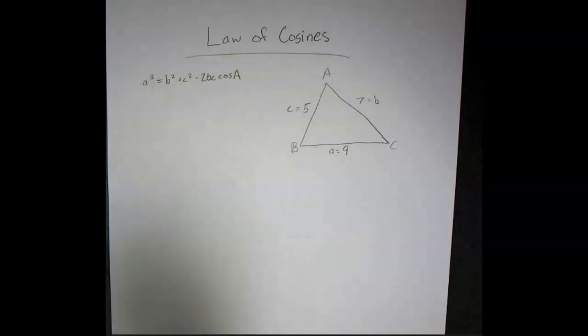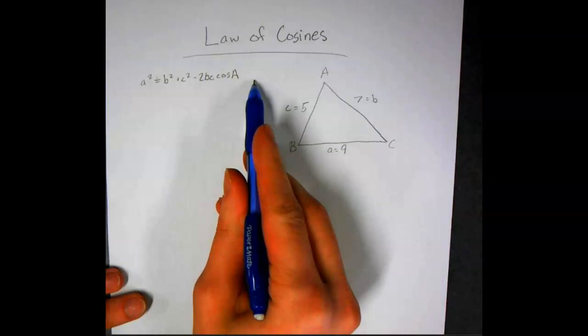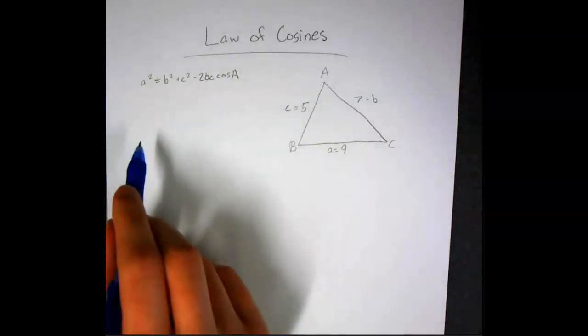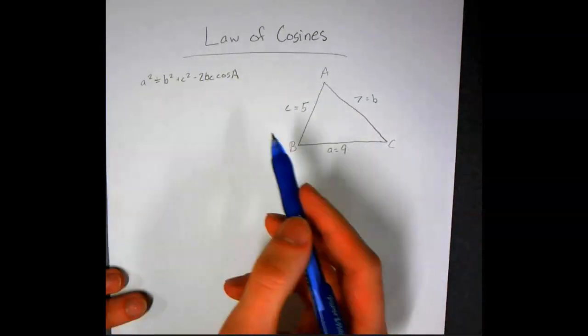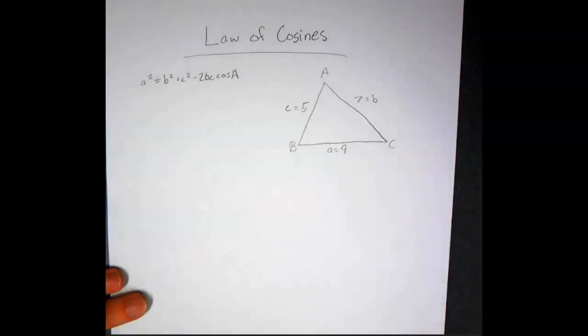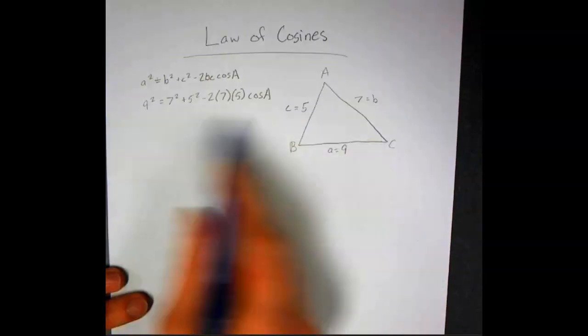Law of cosines is this equation right here, and you can change that out for whichever angle you're looking at or whichever side you're looking at. If we were going to plug this in, then we would have this right here.